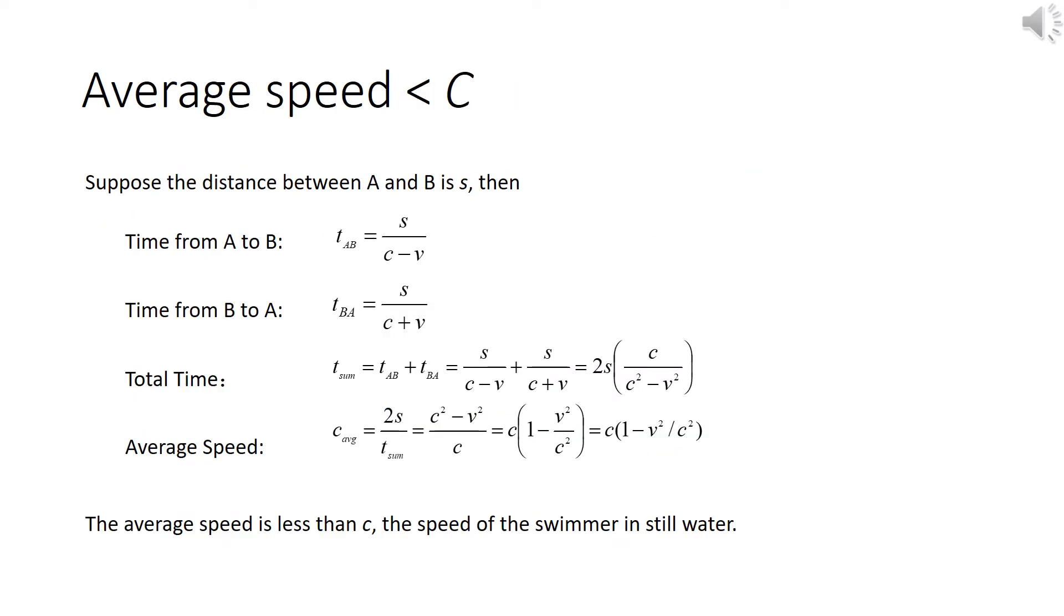This problem is very easy to solve. Suppose the distance between A and B is S. Then the upstream time is S divided by C minus V, and the downstream time would be S divided by C plus V. The total time would be S divided by C minus V plus S divided by C plus V, which would be equal to 2S times C divided by C squared minus V squared.